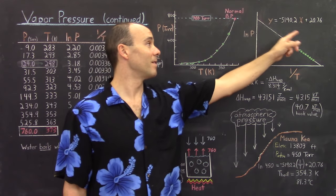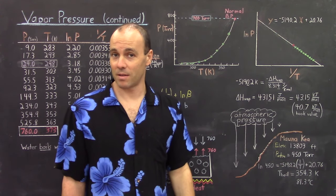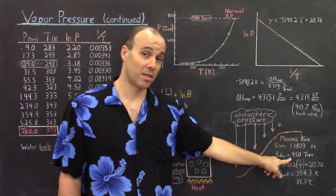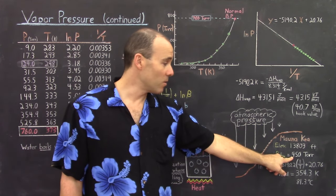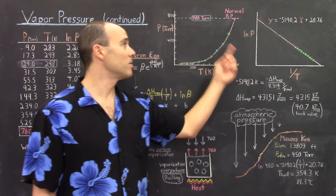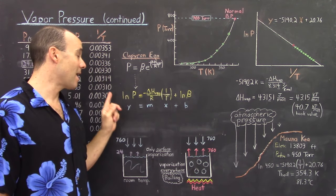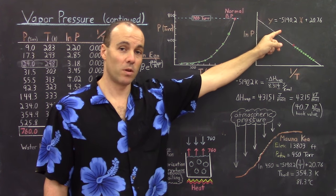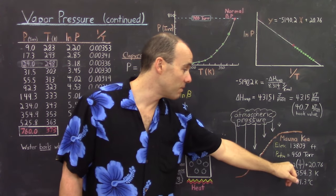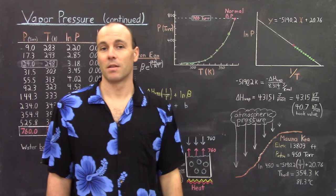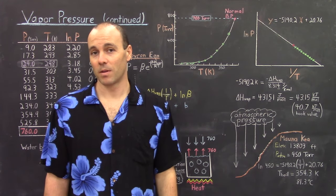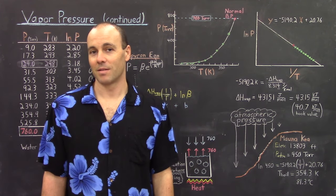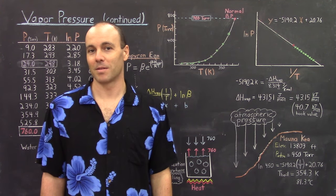This equation can also be used to calculate the boiling temperature at the top of Mauna Kea. The atmospheric pressure at the top of Mauna Kea is much less than 760 — it's 450 Torr. So if we take 450 Torr and plug it into this equation — y would be equal to ln(450 Torr) — and we solve for the temperature, which is 1/x, we would end up getting a temperature of 354.3 Kelvin, or 81.3 degrees Celsius. So water at the top of Mauna Kea will boil right above 80 degrees Celsius, meaning all of those scientists up there in their observatories studying the stars will probably need to boil their eggs much longer than down at the bottom of the mountain.